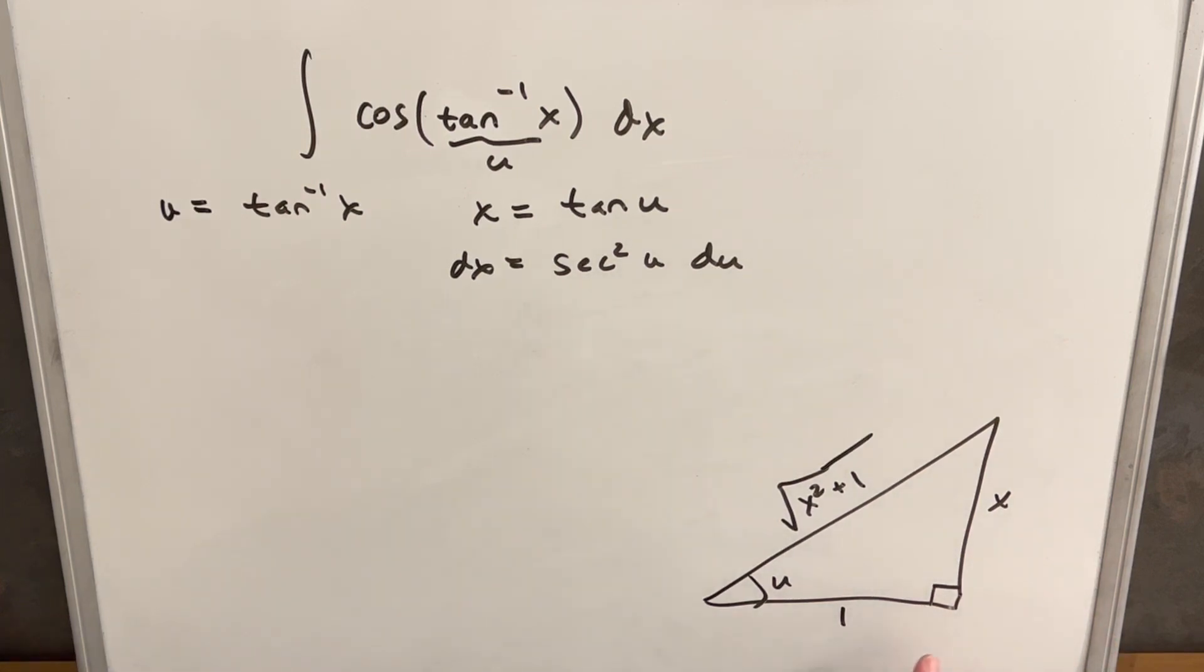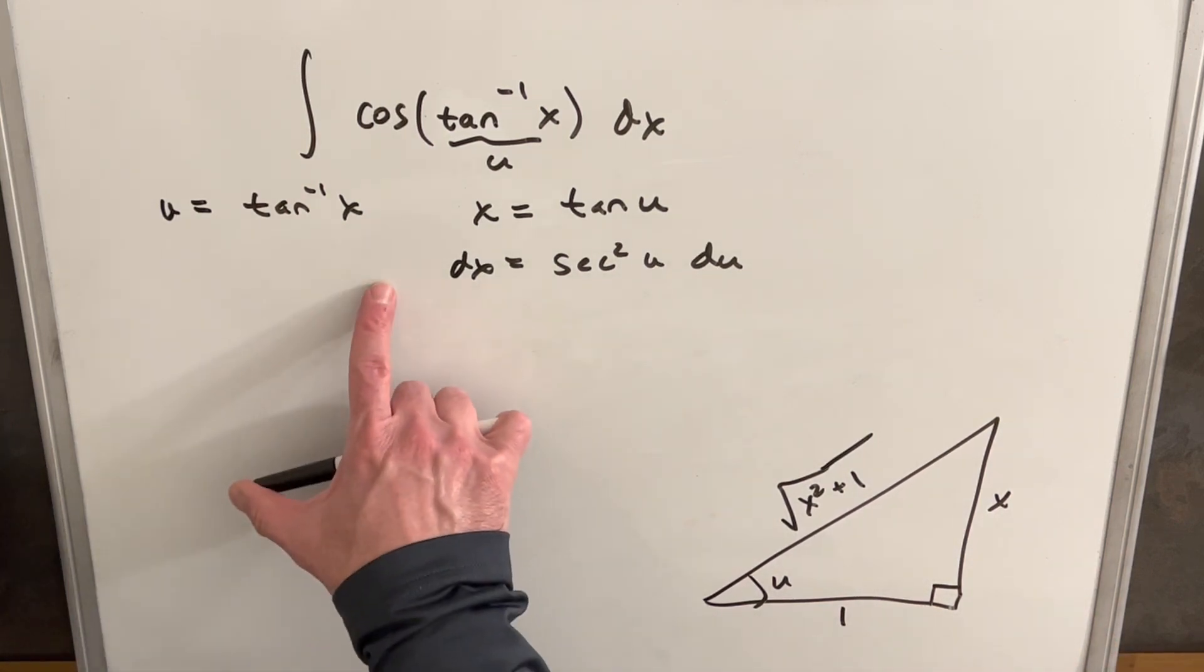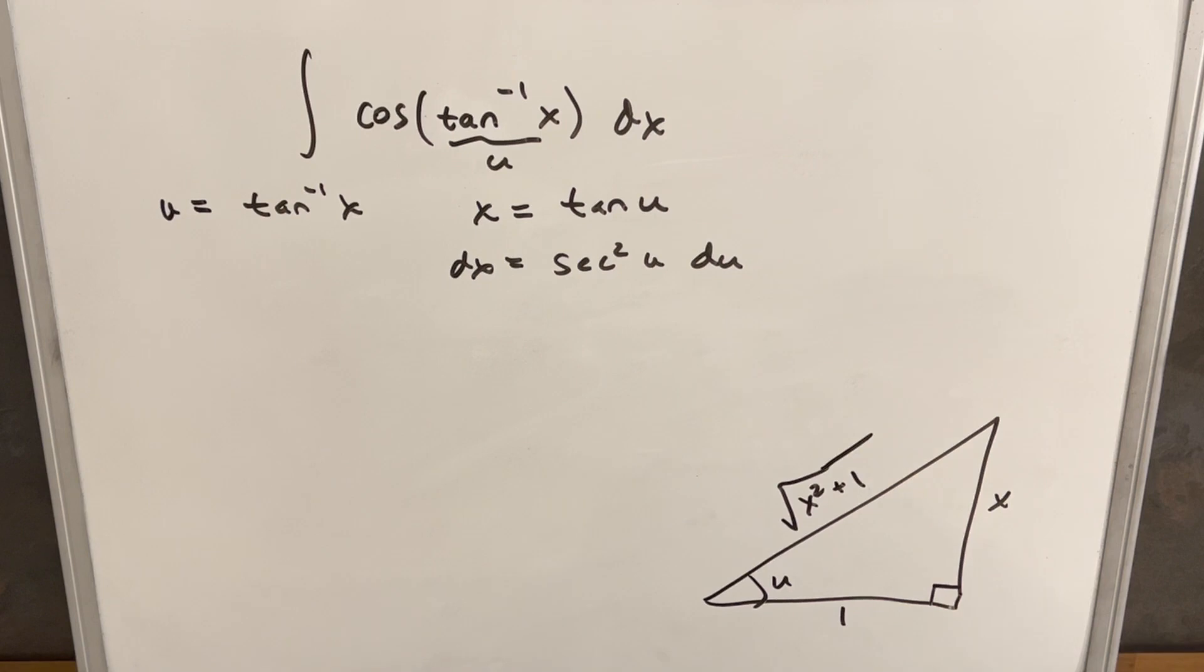Method 2 I'll leave the triangle on the board because I think we need it and I'll leave the values we found here. But rather than making the full substitution we can just look at this triangle that we have with the angle u